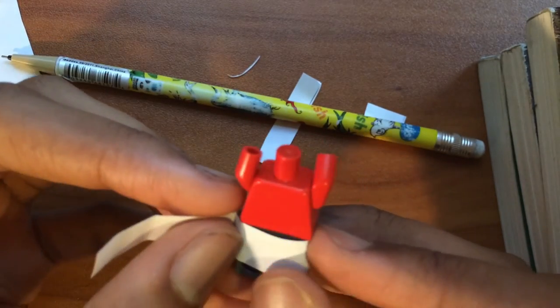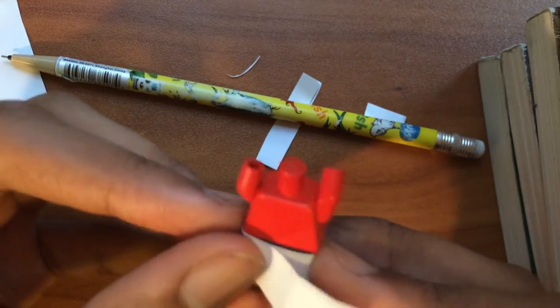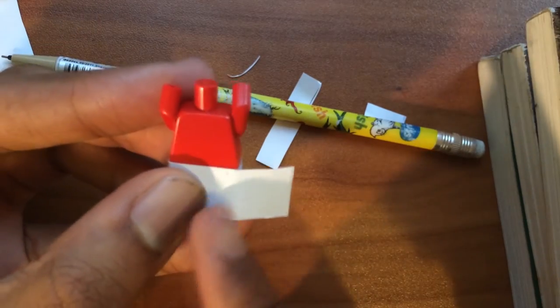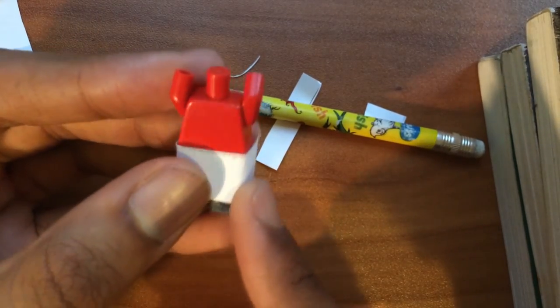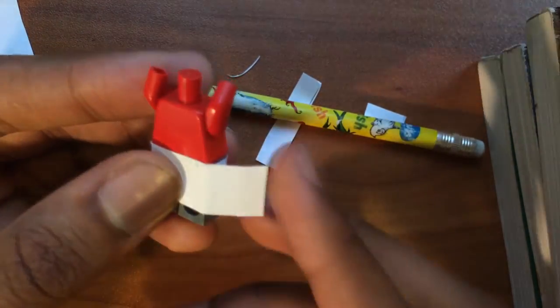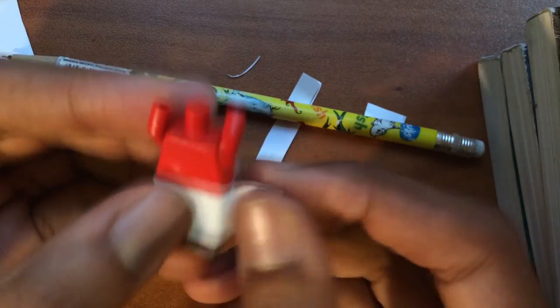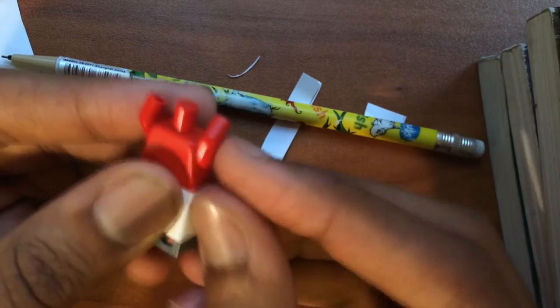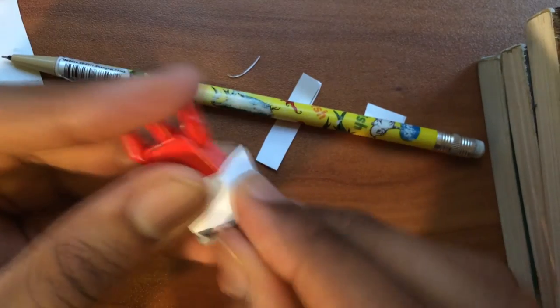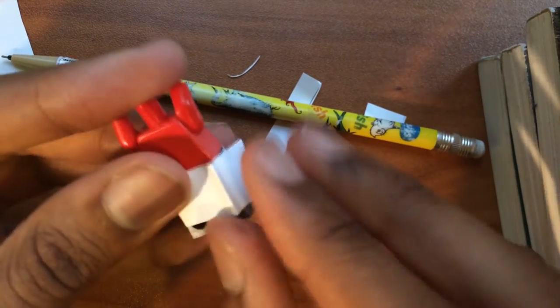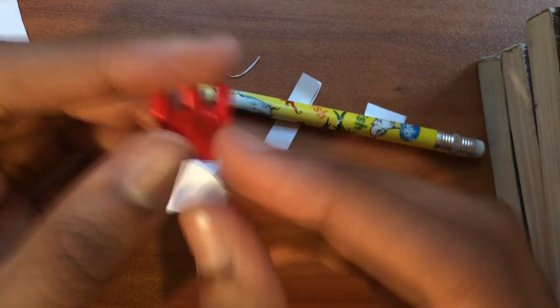So now that we have this, what I normally like to do is I like to have the back be like the last, this back corner be where the two pieces of paper connect. So I'm actually going to make a crease right here. And I'm going to cut this.